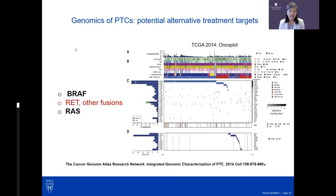Genomics have been well studied. A large 2014 study of over 500 papillary thyroid cancers confirmed that BRAF is the most common mutation in thyroid cancer, followed by RET fusions and then RAS mutations. These mutations drive cancer growth, spread, and invasion, and likely lead to loss of iodine uptake within papillary thyroid cancers — which is why these cancers may lose their ability to be killed by radioiodine.